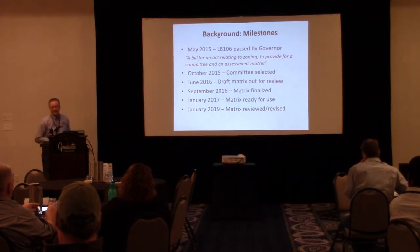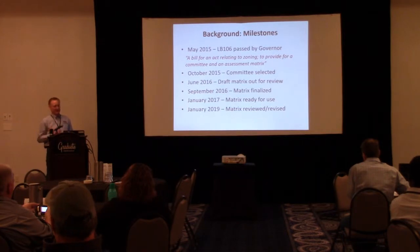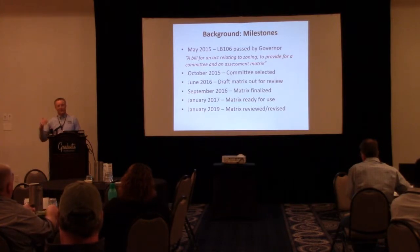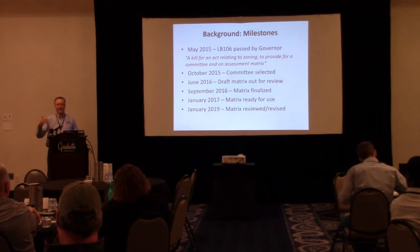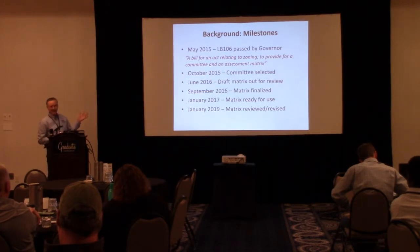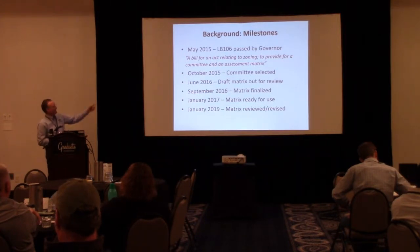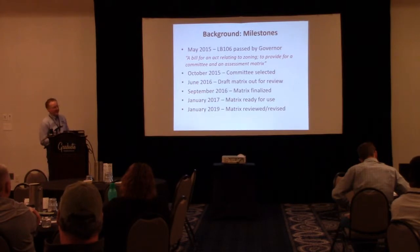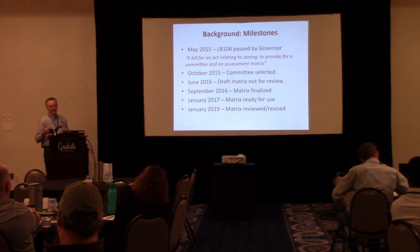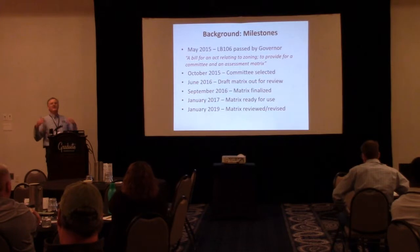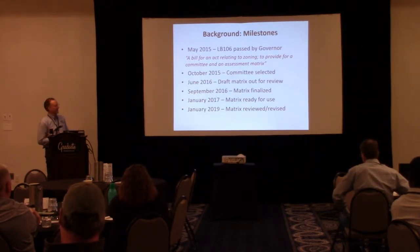The state was looking for a state-level policy. It was proposed by a legislator in Nebraska as a mandatory requirement, so that if you met the state requirements the county would not have jurisdiction. What was actually passed by the governor in May 2015 was the background for the matrix. The committee was put together in October 2015. By June 2016 we had developed the matrix for review, and it was finalized and ready for use in January 2017. After two years of use, the committee got back together last fall, reviewed it, made some changes, and it is again ready for use.